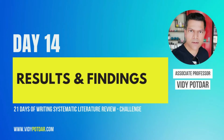Today we are going to start the next section of your systematic literature review paper — that is results and findings. In this section there are a lot of activities that you need to do. Basically, whatever we have planned in section three of the review paper on methodology, we have to execute that over the next few days. So that is what we are going to do.